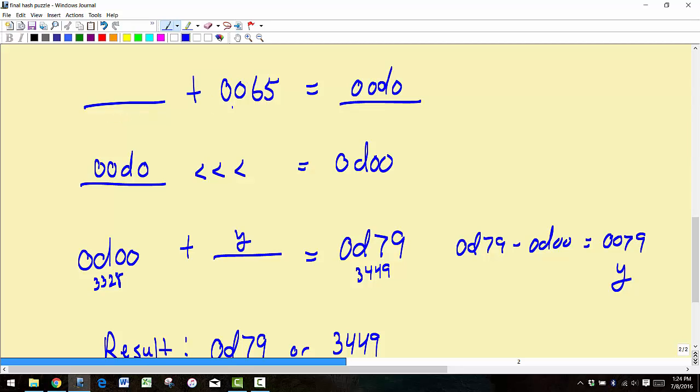...look at what this guy is. This value here is like 101 in decimal and this is 208 in decimal. So we can just subtract again this guy here from this guy. So we got 00d0 minus 0065 and we get 006b.